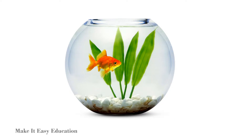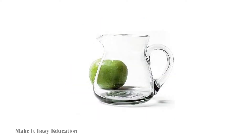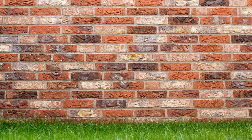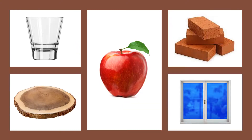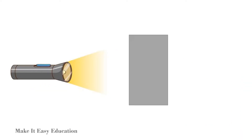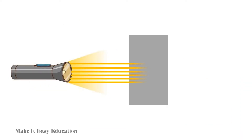We can see through clean water or glass, but not through a brick wall or a book. This happens because different materials allow different amounts of light to pass through them. Some materials allow light to pass through them completely.